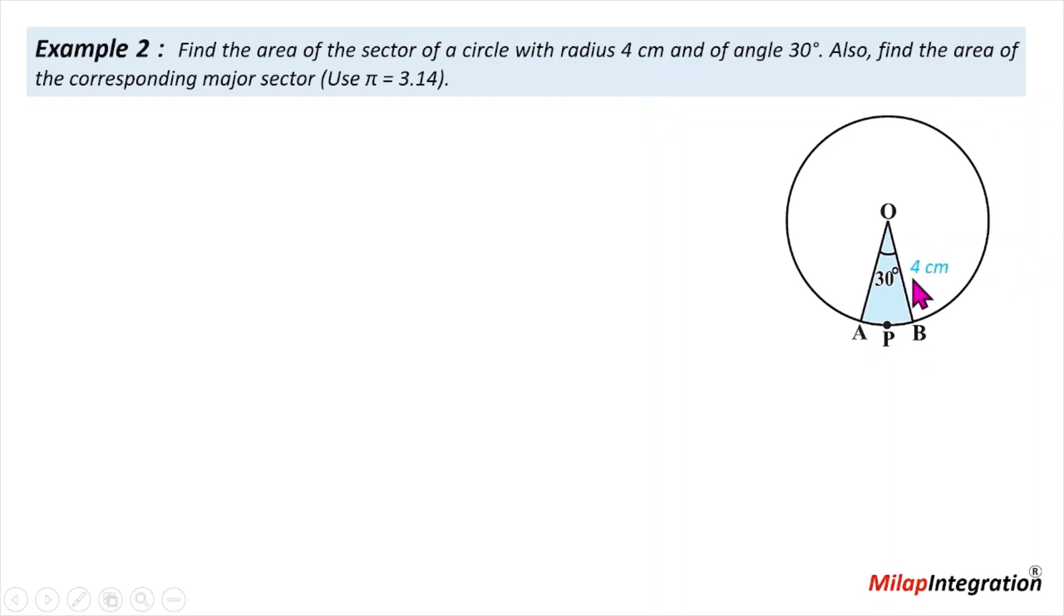So what do we need to know about this blue color, this sector's area? The area of a sector is theta upon 360 degrees, because total 360 into pi r square. Pi r square is the area of the circle.